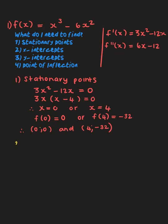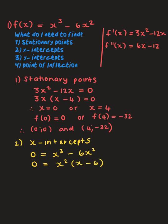For the x-intercepts we let y = 0: x³ - 6x² = 0. I can see x² is a common factor, leaving x(x - 6) = 0. Using the zero factor law, x = 0 or x = 6. Notice that one of the x-intercepts shares an x-value with a stationary point, so the graph is going to turn on its x-intercept.